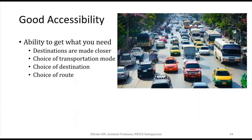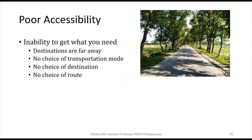Good accessibility is the ability to get what you need, or destinations are made closer. We have a lot of choices in transportation mode, destinations, and routes, so everything is accessible easily. Poor accessibility means destinations are far away from where we reside — if we want to go to the city center or commercial area, it is far away, and there is very little or no choice of transportation mode, destination, or route.